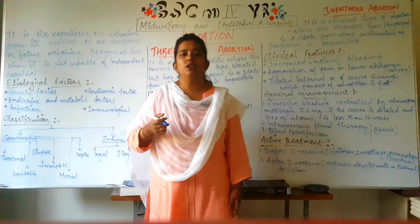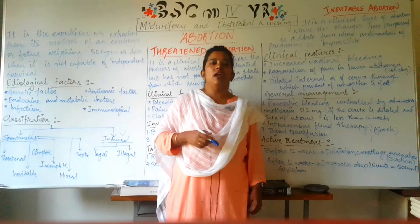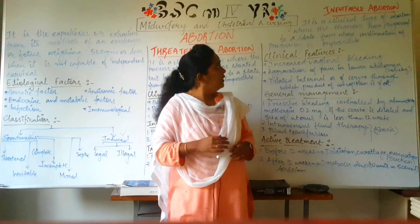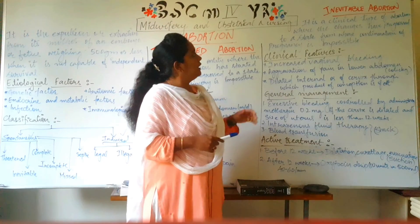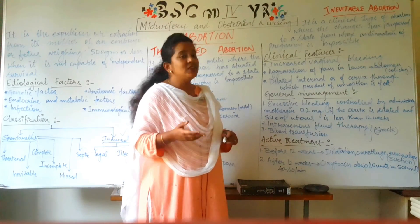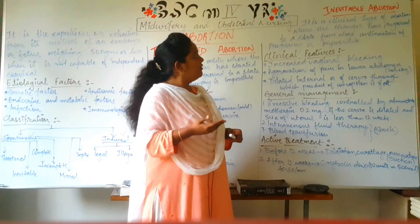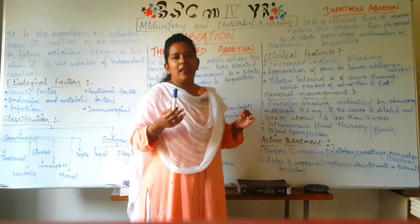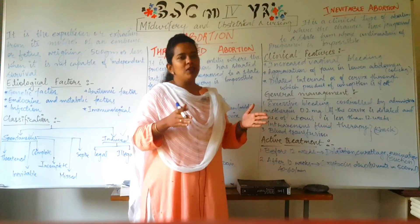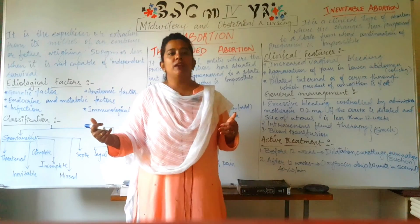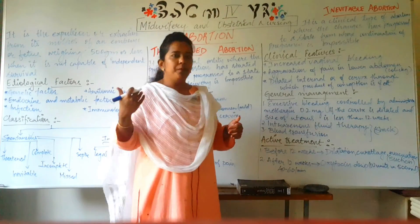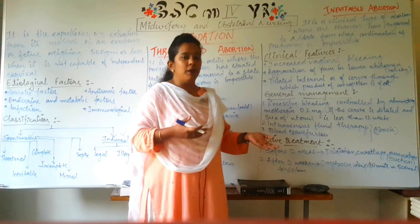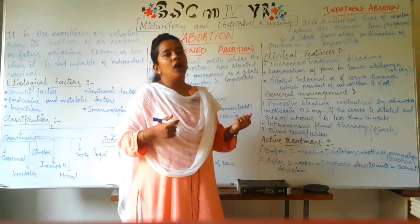Now the next type of abortion is inevitable abortion — the second type under spontaneous abortion. Inevitable abortion is a clinical type where changes have progressed to such an extent that the continuation of pregnancy is impossible. In inevitable abortion, the pregnancy can no longer be continued. The fetus will abort. Therefore, attention now shifts to the mother's health and preventing complications.